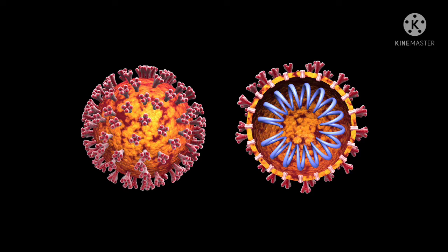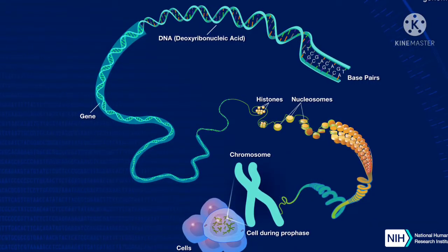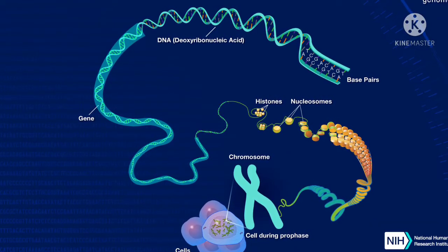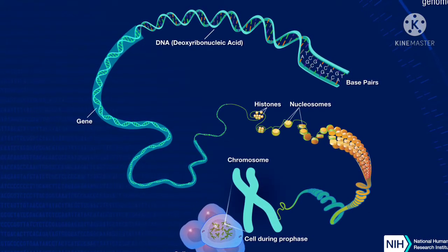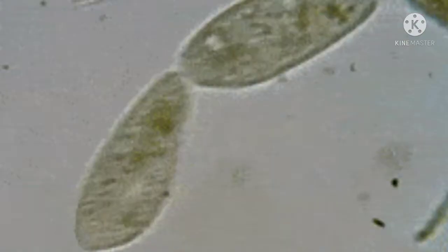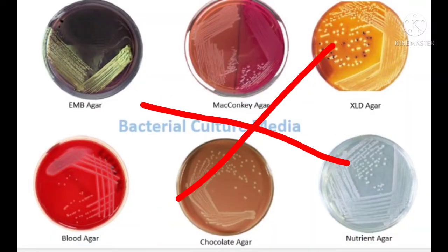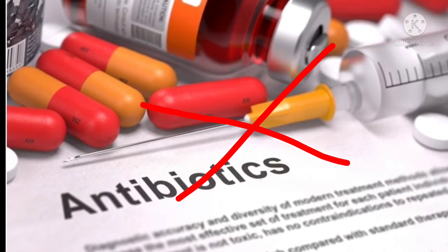Viruses lack the enzymes necessary for protein and nucleic acid synthesis. The viral genome diverts the host metabolism to synthesize a number of virus-specific macromolecules required for the production of virus progeny. They multiply by a complex process and not by binary fission, do not grow in inanimate media like bacteria, and are resistant to antibiotics.